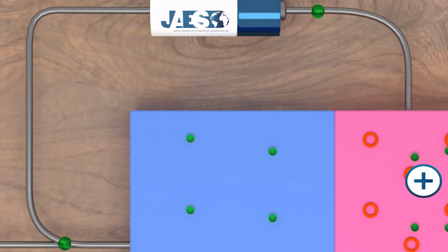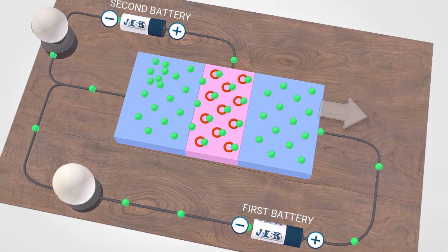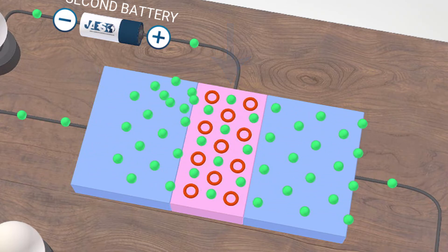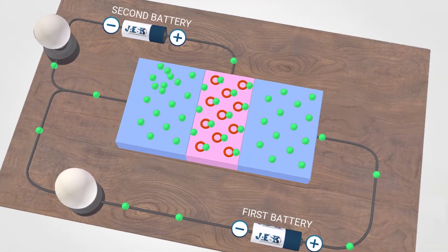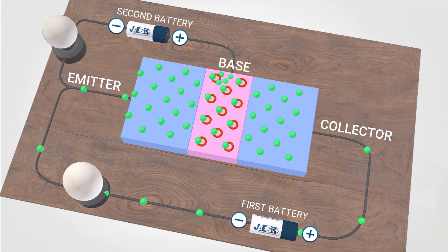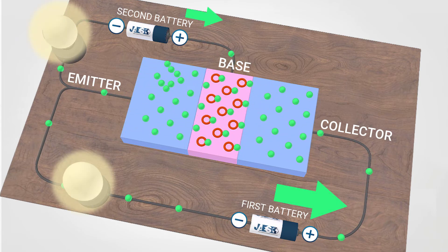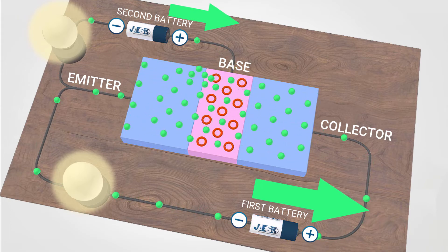These electrons will be attracted by the positive pole of the first battery and will flow in this direction. The narrow dimensions of the P-side ensure that no excess electron inside it flows to the positive terminal of the second battery. In short, a low base current is amplified to a high collector current. If the base current is increased, the collector current will increase proportionally, thus demonstrating a clear example of signal amplification.